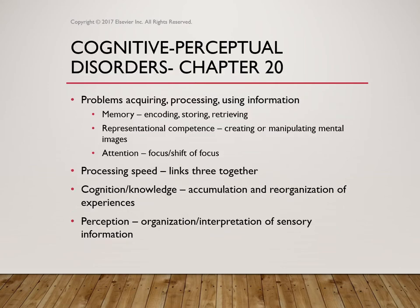When we look at problems with processing and using information, we look at cognitive perceptual disorders, especially in children. This encompasses memory — encoding, storing, and retrieving information — the competence of creating or manipulating mental images, and attention: focus, shift of focus, and the ability to absorb information. Processing speed links all three together, along with cognition and knowledge through the accumulation and reorganization of experiences. We also look at perception — the organization and interpretation of sensory information.